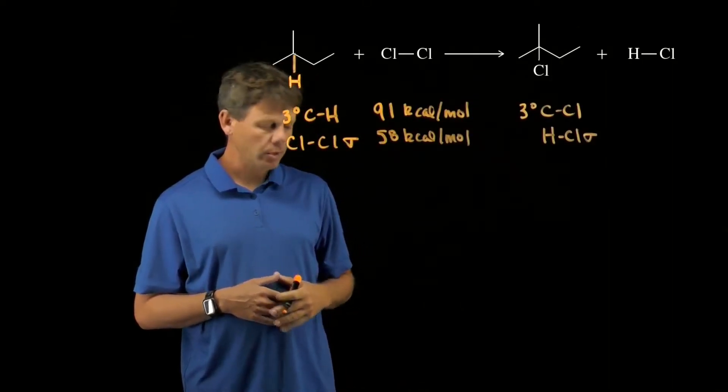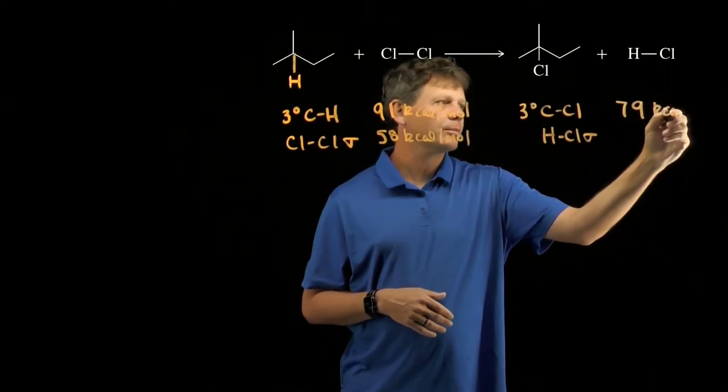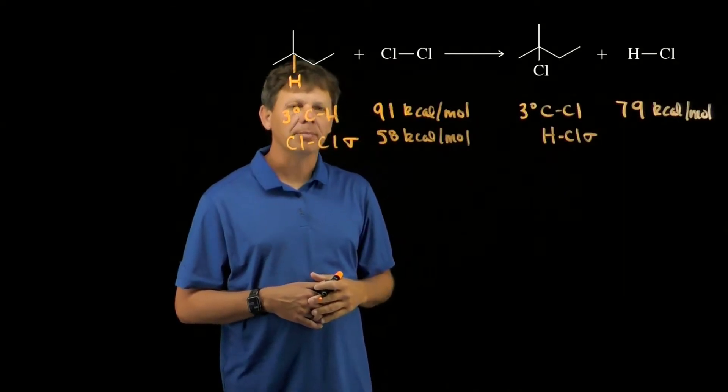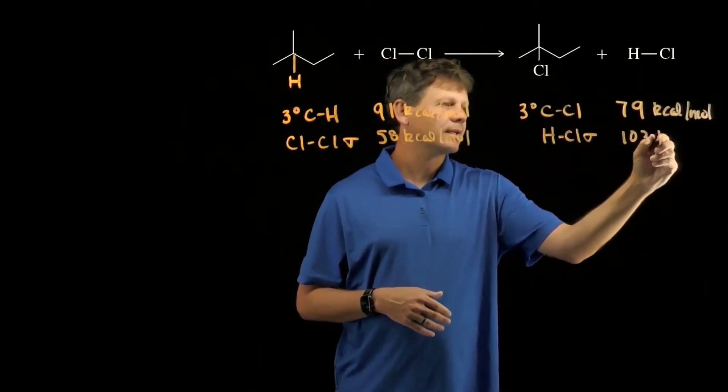The tertiary carbon-chlorine bond has a bond association energy of 79 kilocalories per mole, and the HCl sigma bond has a bond association energy of 103 kilocalories per mole.